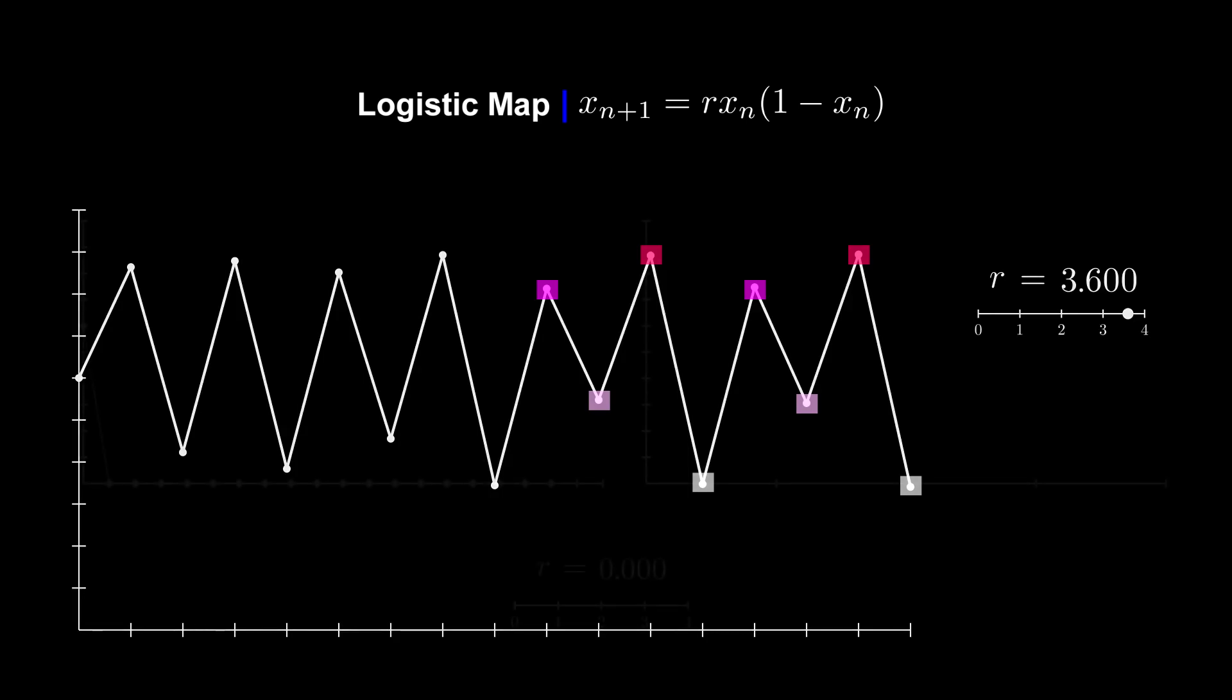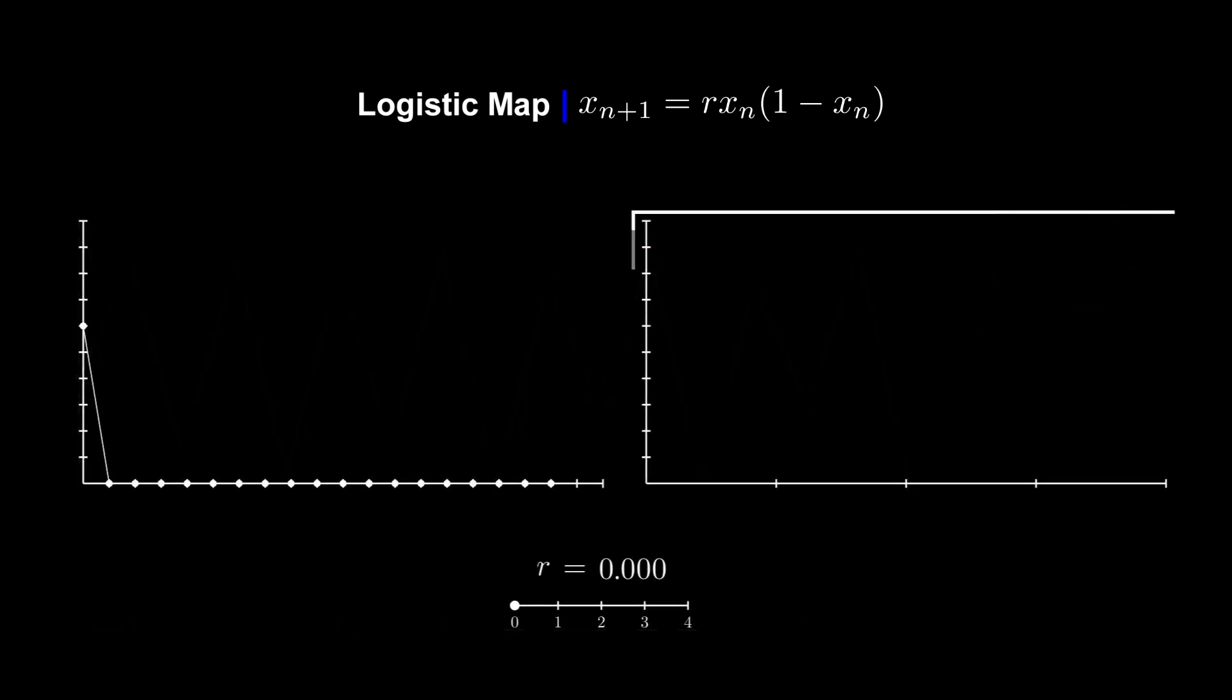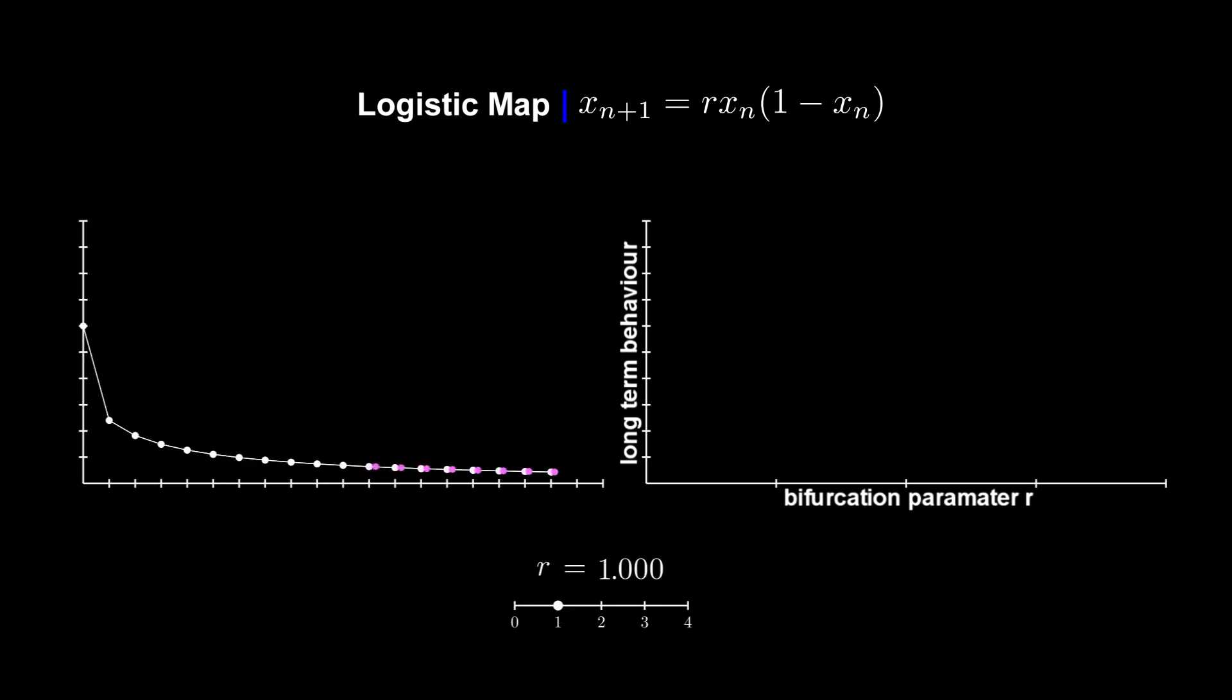An interesting way to visualize this is by using a bifurcation diagram. The horizontal axis represents our bifurcation parameter, and the vertical axis describes the long term behavior of our population. When the value of r is 1, we take the last few points of our logistic map and plot it in our bifurcation diagram. And we continue this process for different values of r.